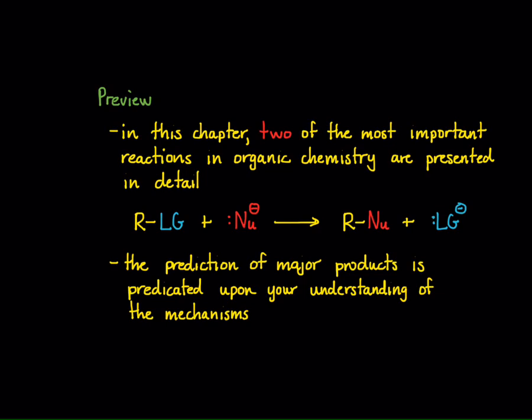We're going to be looking at an SN1 reaction, which is a unimolecular rate determining reaction, and an SN2, which is a bimolecular.